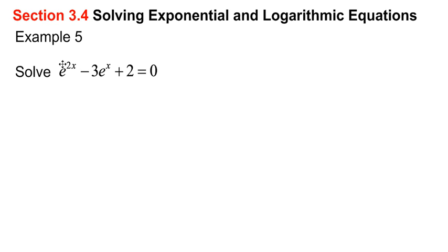If you kind of want to think of it like this, we could think of this as e to the power of x squared. So basically I'm just rewriting my first term as e to the power of x squared minus 3e to the x plus 2 equals 0.